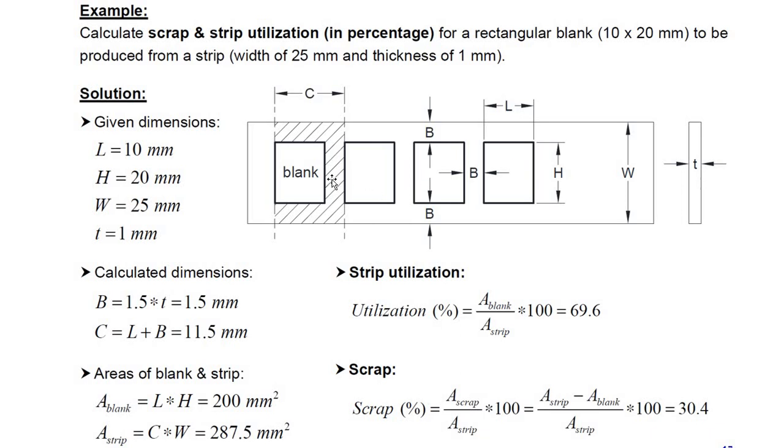If you change the orientations, if you change the combinations, keeping the thumb rules for lead and the distance between blank and strip edge, follow these rules for calculating B and C, and try different combinations of layout. You will get different percentage utilization and percentage scrap. The one layout which gives us maximum utilization and minimum scrap will be more appropriate.